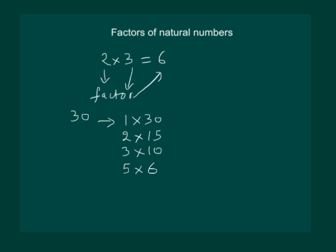Hence we stop here and we get all the factors of 30 as 1, 2, 3, 5, 6, 10, 15 and 30.